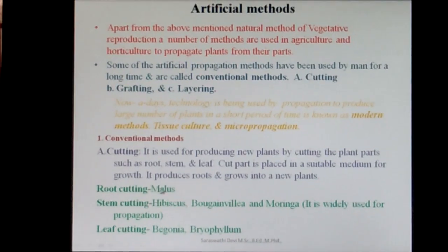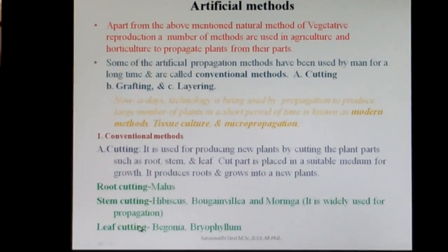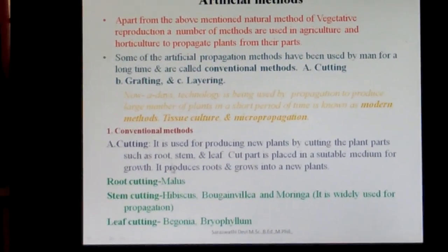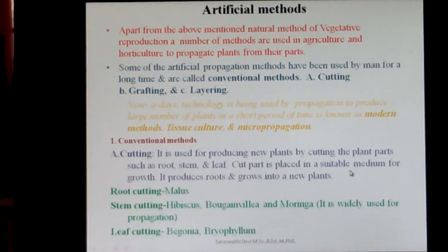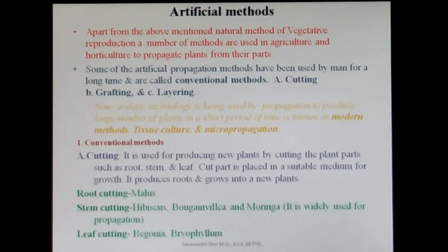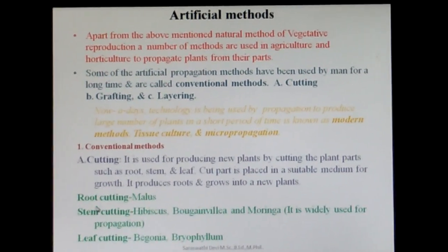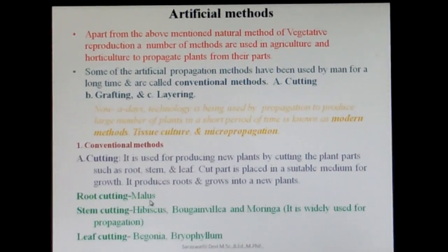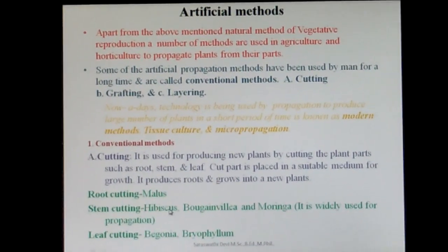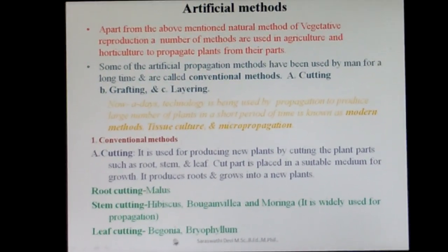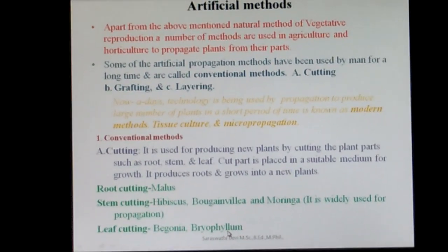In the conventional method, three types are used. The first is cutting. Cutting is classified into three types: root cutting, stem cutting, and leaf cutting. Cutting means a portion of the plant — root, stem, or leaf — is cut and placed in a suitable medium, where it gives rise to the next generation. Root cutting example: Malus. Stem cutting examples: Hibiscus, Bougainvillea, Moringa — stem cutting is the most commonly used. Leaf cutting examples: Begonia and Bryophyllum.